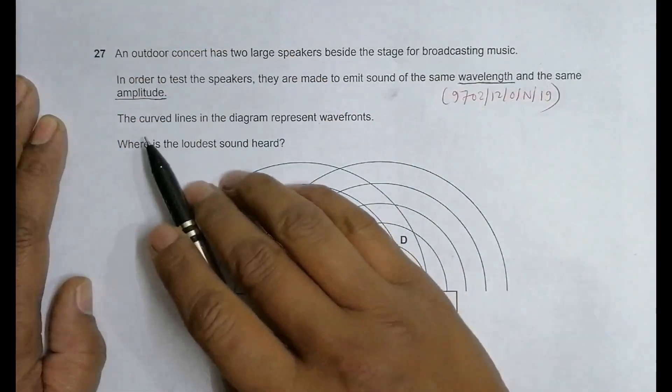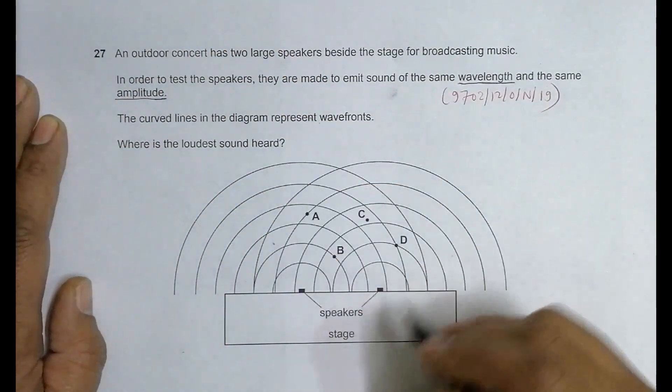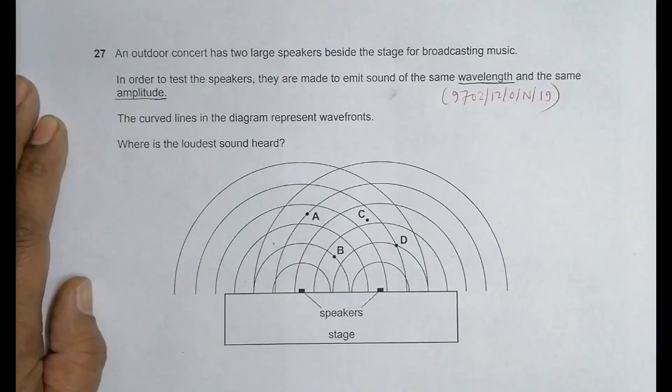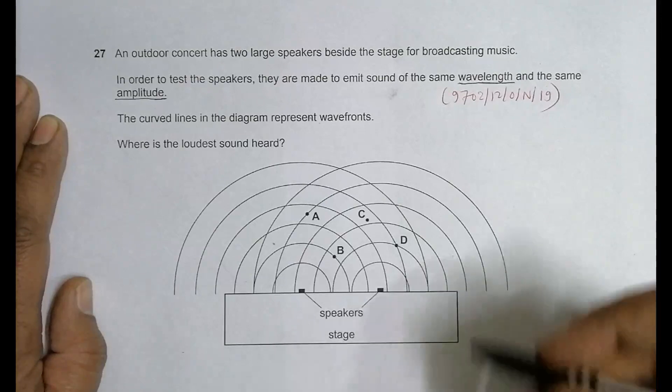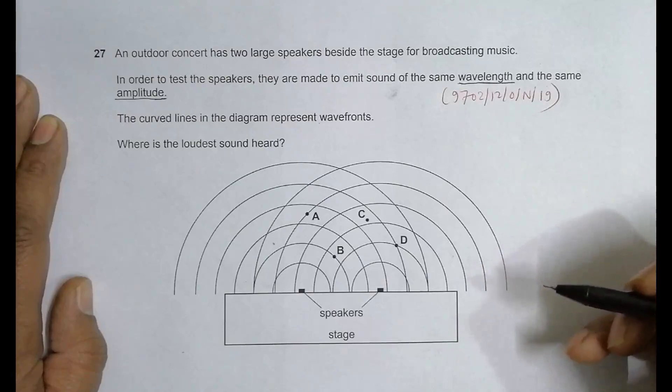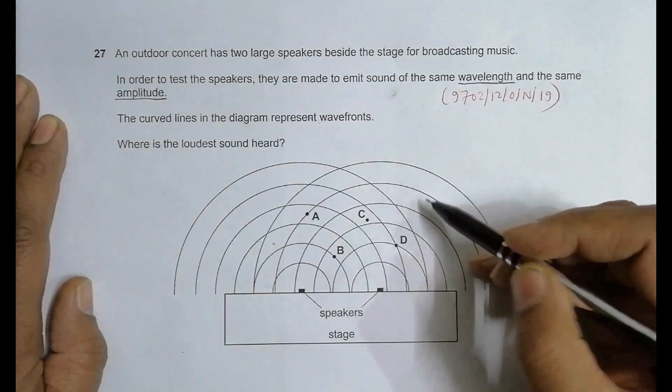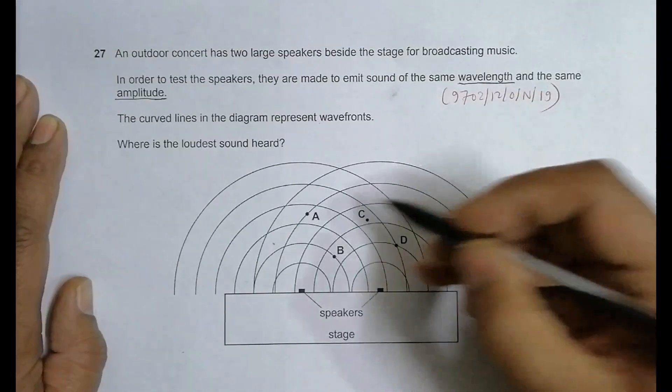The curved lines in the diagram represent wavefronts. Wavefronts mean that they are the locus made by either crest or trough. Let's assume that in this case they are the locus made by the crest.